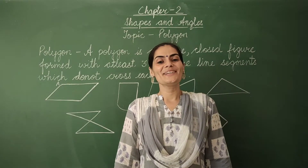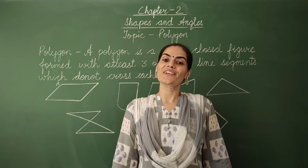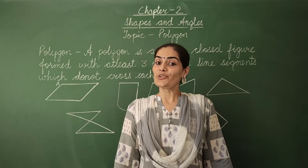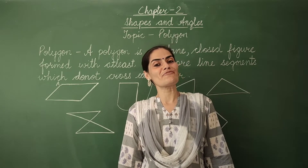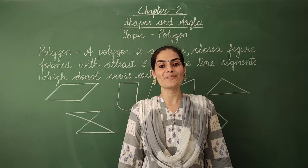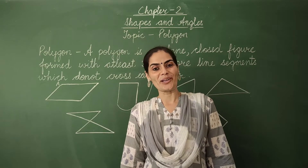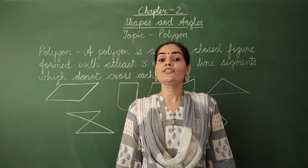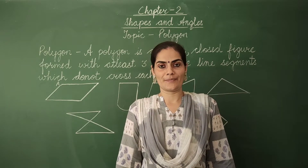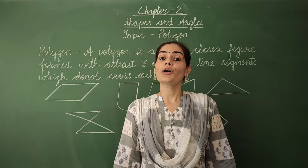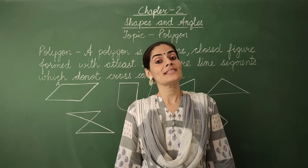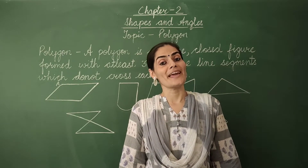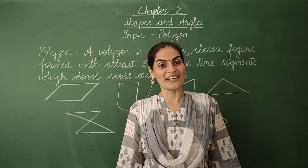Hello everybody. Today we are continuing with Chapter 2, Shapes and Angles. We are going to learn about a very interesting concept and that is Polygon. This word Polygon is actually made with two words — Poly and gon. Poly means many and gon means angle. So a figure which has many angles is actually a polygon.